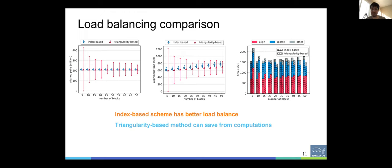But at the right, you can see the triangular-based method, which is able to save a lot of computations, and when the number of blocks increases, the effect of this load imbalance reduces or disappears in the triangular-based method, because the number of diagonal blocks is proportional to order of n, while the number of entire blocks is proportional to order of n-squared. So the takeaway is that when the number of blocks is relatively high, we prefer the triangular-based method. When it is low, we prefer the index-based method.